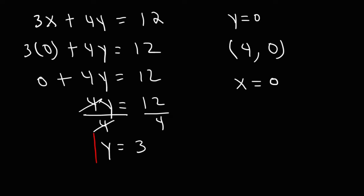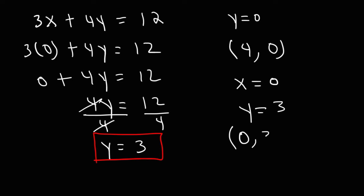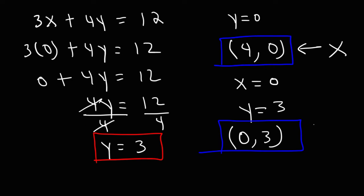And so we get our answer. The ordered pair shows that x was 0 and y was 3. So (0, 3) is the y-intercept and (4, 0) is the x-intercept. That's how you find the x and y-intercepts of an equation.